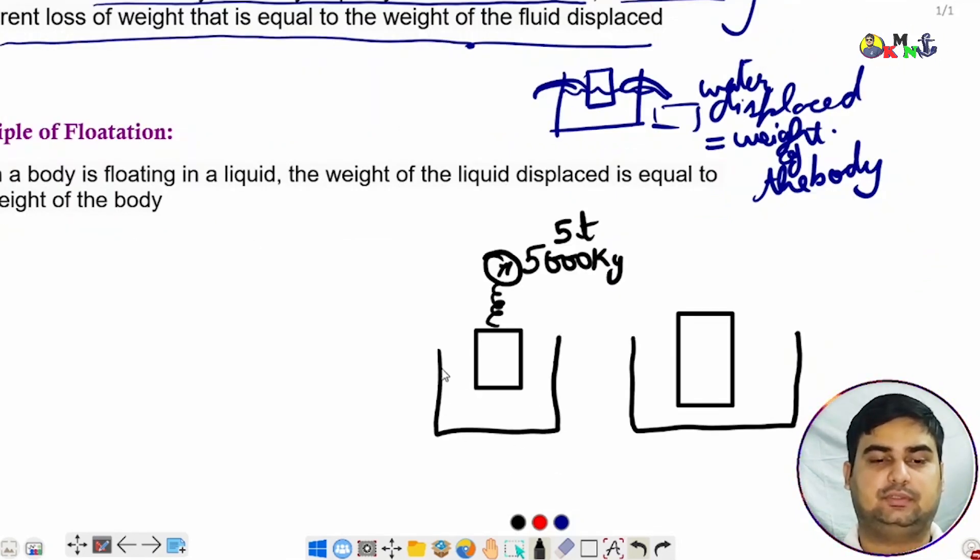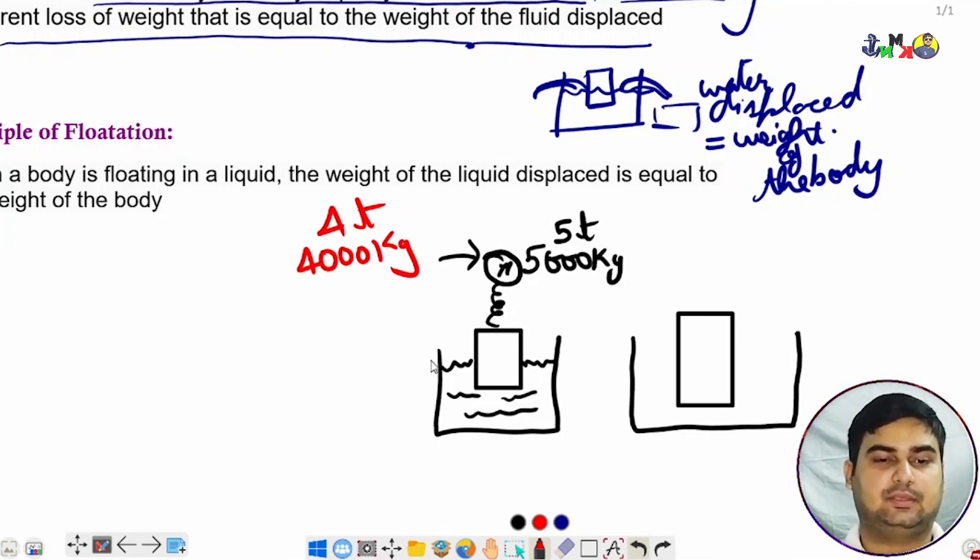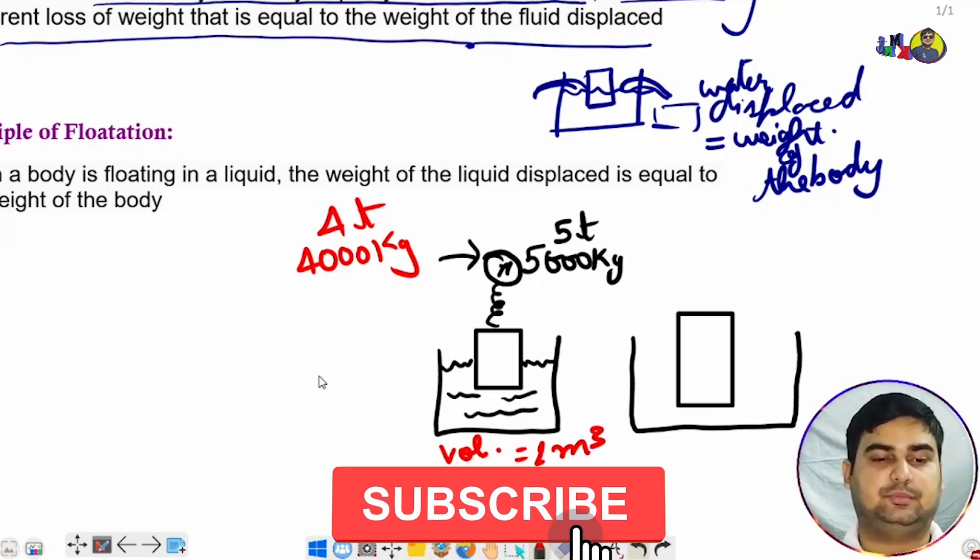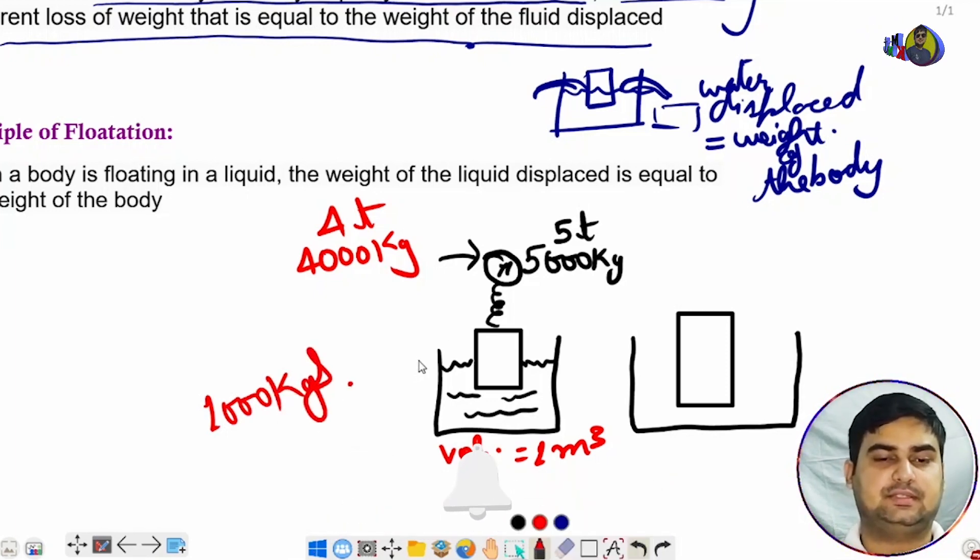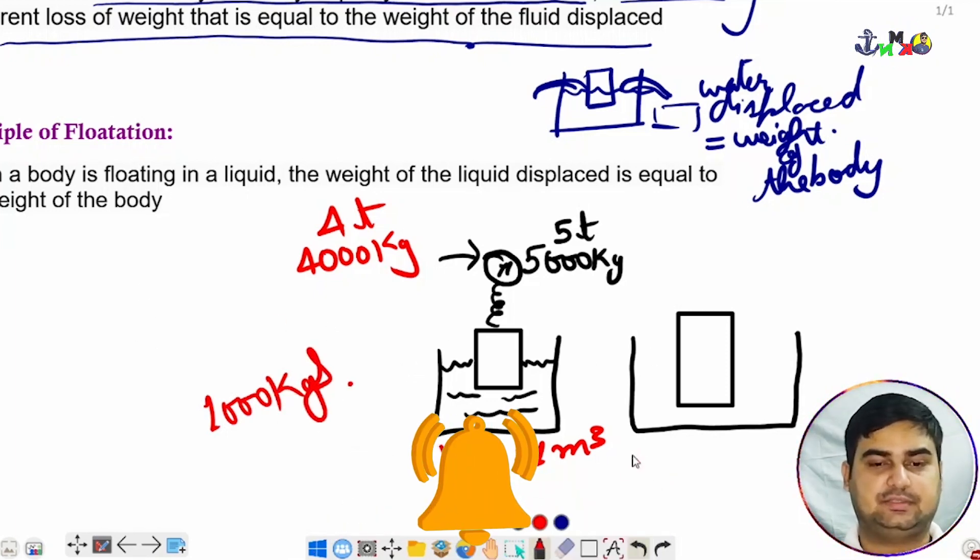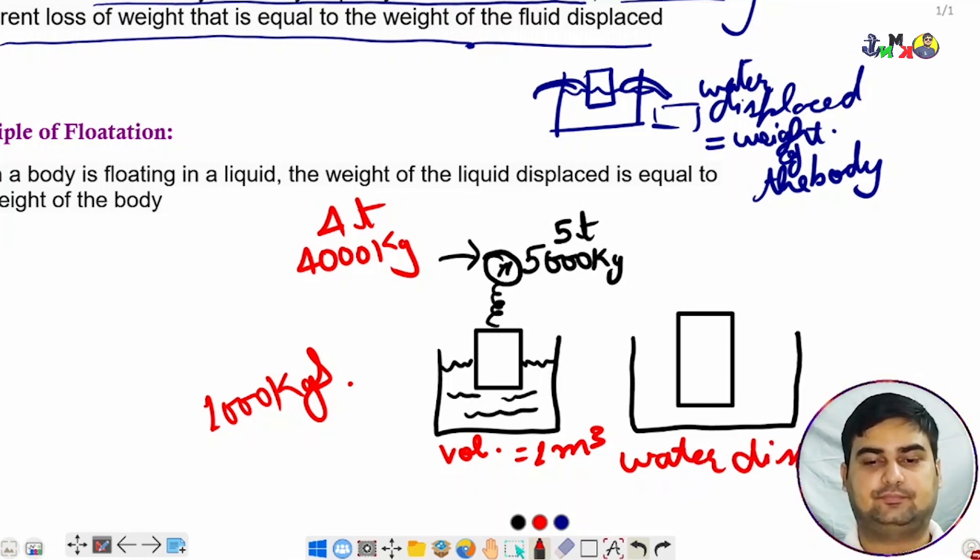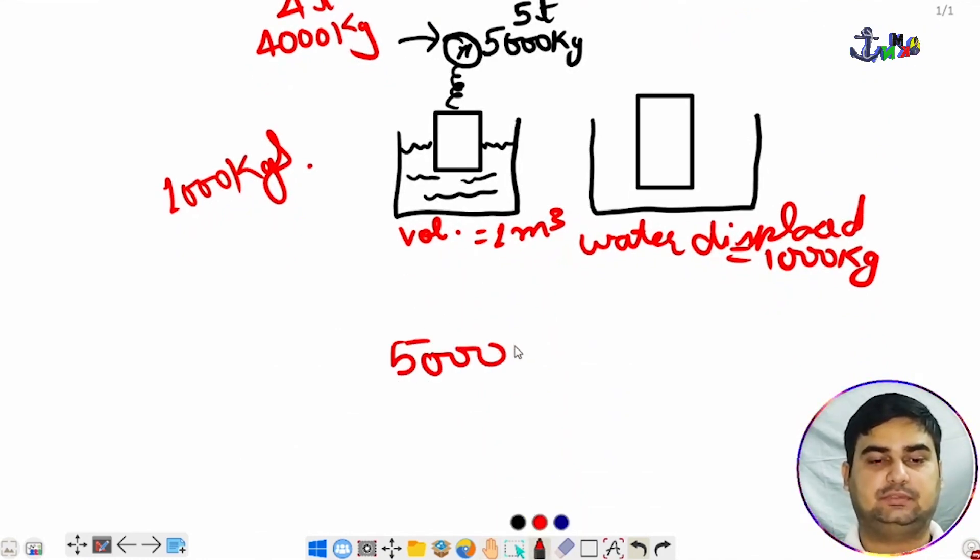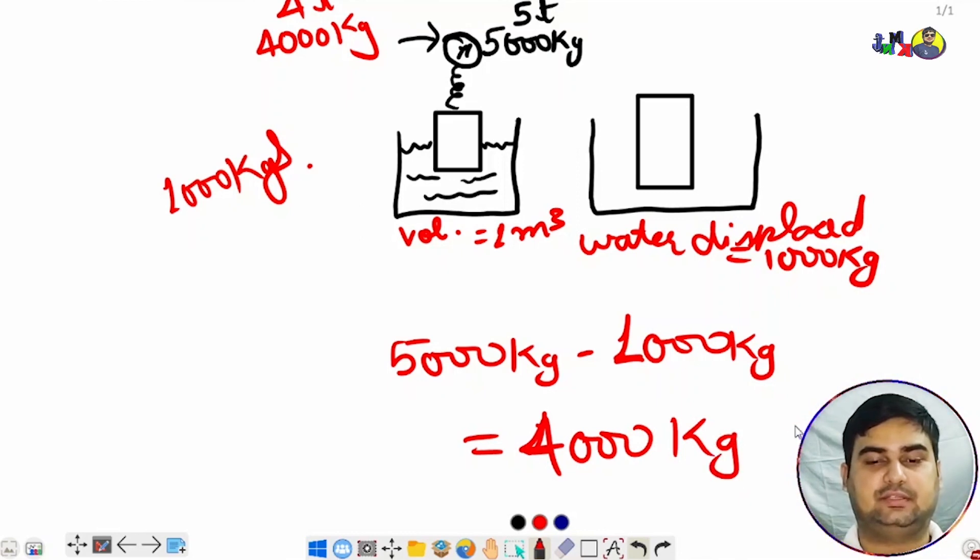When we see the spring balance, it is showing 4000 kgs or 4 tons. Water is displaced. This is one cubic meter volume, so around 1000 kgs has been displaced. Water displaced is 1000 kgs. 5000 kgs minus 1000 kgs means the spring balance will show 4000 kgs or 4 tons.